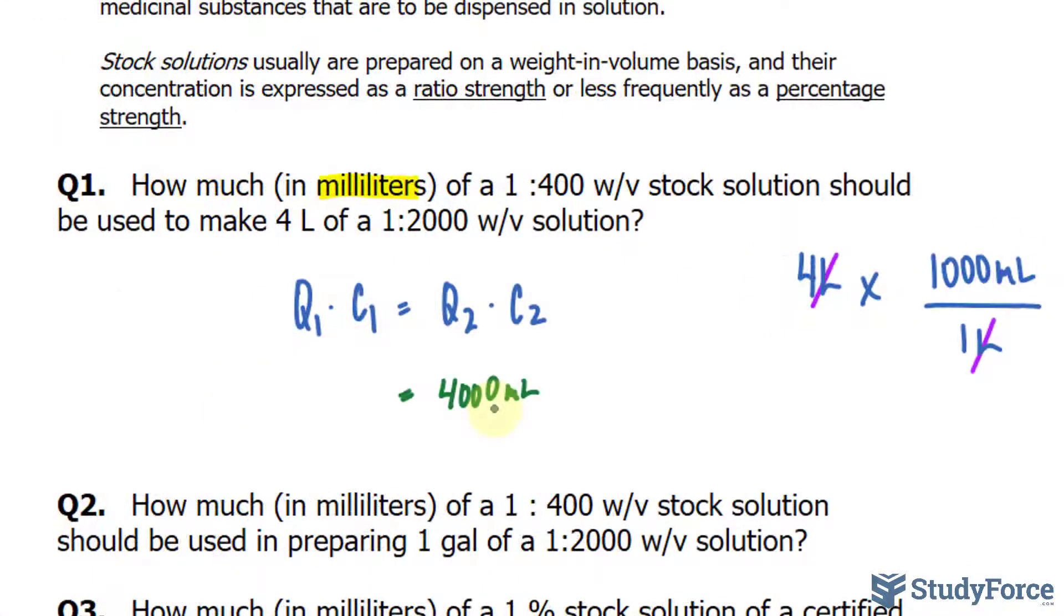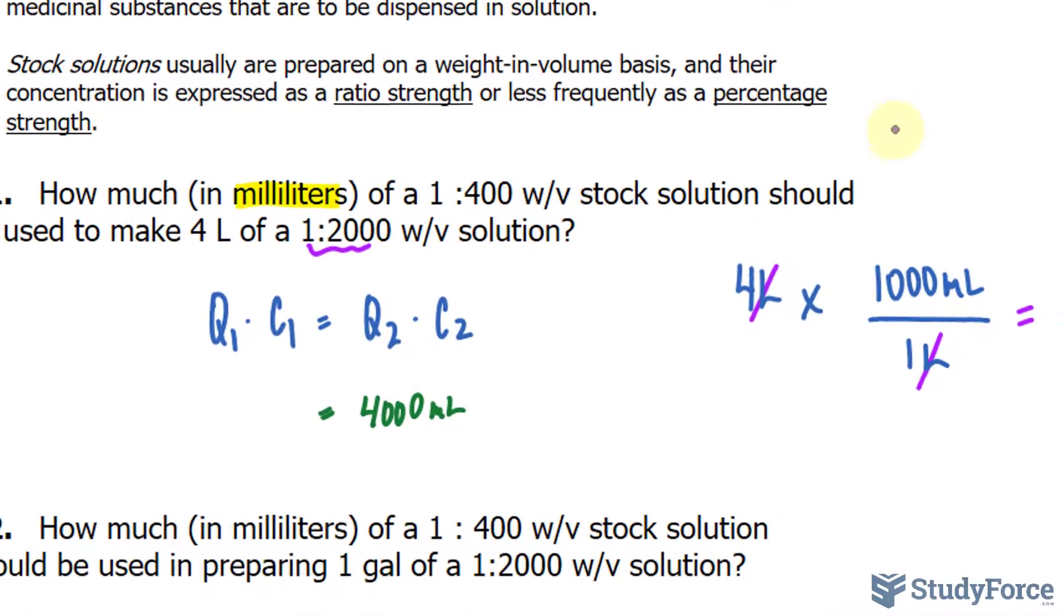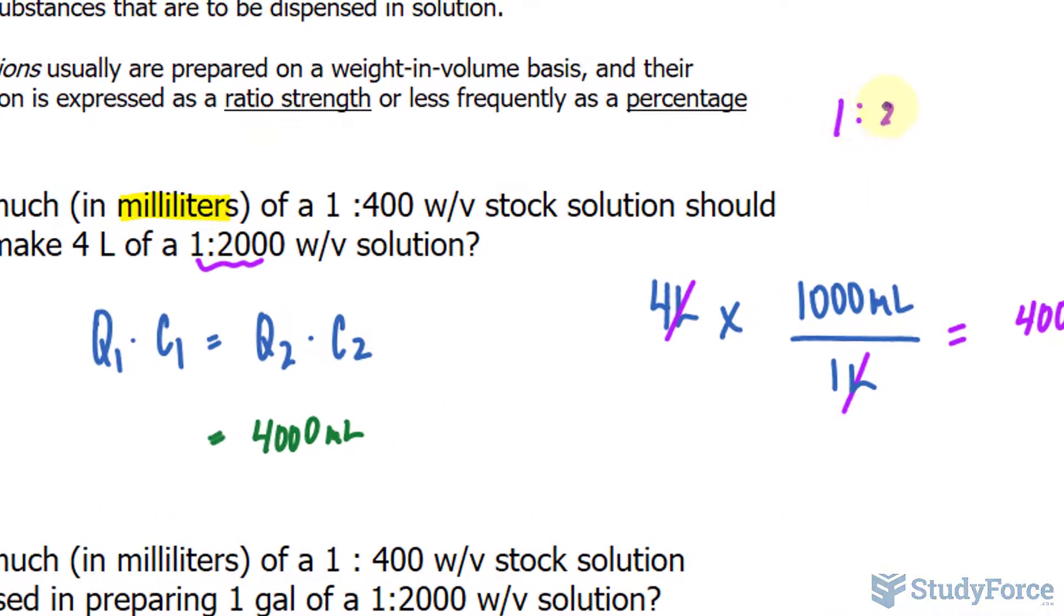And the concentration of the final solution, the one being diluted, since we're going from a ratio of 1 to 400 to 1 to 2,000, the concentration of the diluted solution is this ratio of 1 to 2,000.